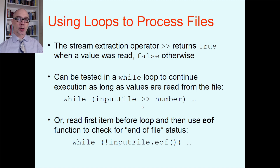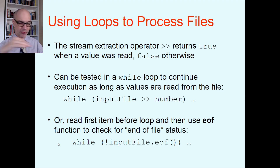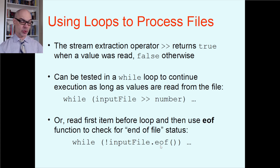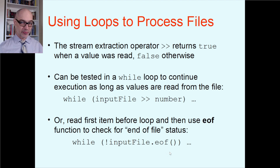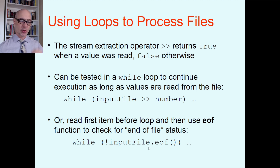There's a second way to structure these loops. You can read one item before the loop, then use the member function eof() which returns true if you've hit the end of file and false if there's more. So: read one thing, then while (!inputFile.eof()) — meaning while I'm not at the end — go into the loop body, do something with it, read another piece of input, and repeat. At some point you'll hit the end of file, eof() returns true, not-true is false, and you're out of the loop.